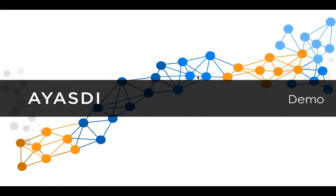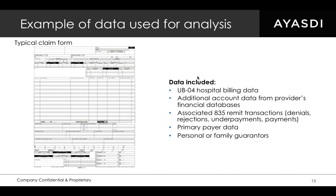I'd like to now talk you through the process I just described live with a particular example. In this example, we're using data that follows the format of the UB04 form, so for each form locator on this form you get one data field. This includes everything like procedure codes, diagnosis codes, providers, whether or not a pre-cert was obtained, condition codes, occurrence codes — everything that appears on a UB04. We also had additional data coming from the provider's financial databases and the associated 835 remit transactions, so we could see what happened to each claim — whether it was rejected, denied, appealed, or how it was processed. We restricted our work to primary payer data and to personal or family guarantors.